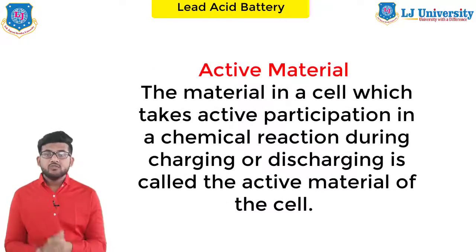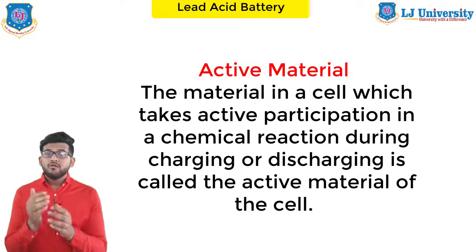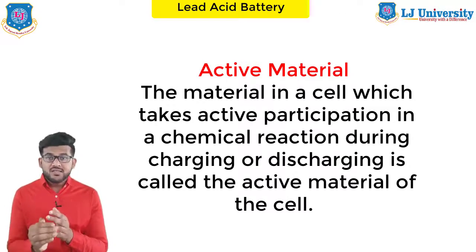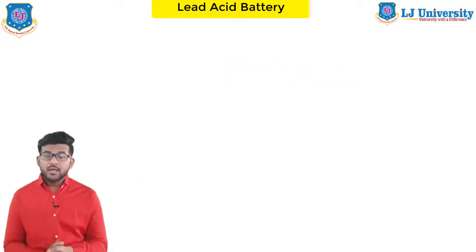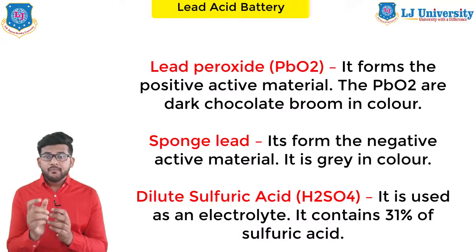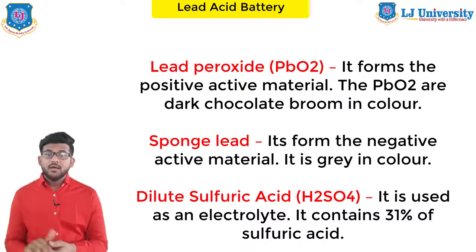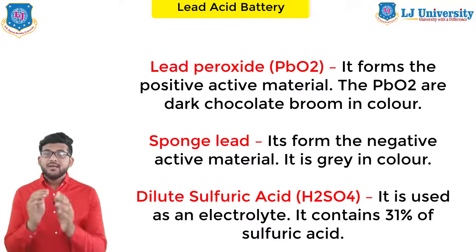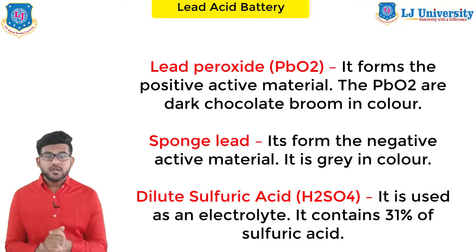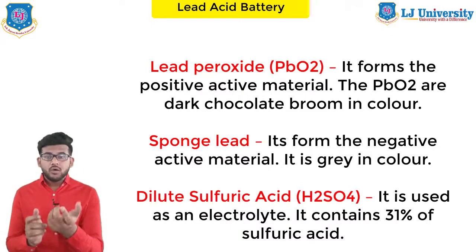Next is active material. The material in a cell which takes active participation in chemical reactions, such as absorption or evolution of electrical energy during charging or discharging, is called the active material of the cell. The active elements of the lead acid battery are: lead peroxide, PbO2, which forms the positive active material and is dark chocolate-brown in color; sponge lead, Pb, which forms the negative active material and is gray in color; and dilute sulfuric acid, H2SO4, used as the electrolyte, containing 31% sulfuric acid.